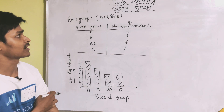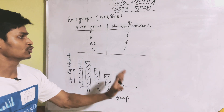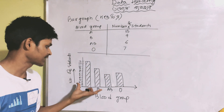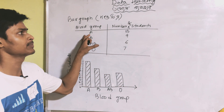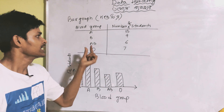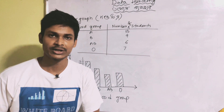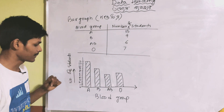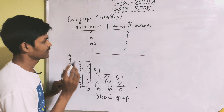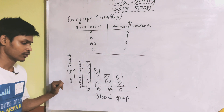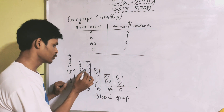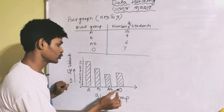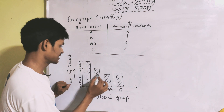This is a bar graph — in Bengali called 'dondo chitro.' We are given a diagram. A data is given: we are given blood groups of a school. For blood group A, the number of students is 13. For blood group B, the number of students is 6. For blood group O, the number of students is 7. From the graph, we can read: A group had 10, B group had 7, and O group had 6.